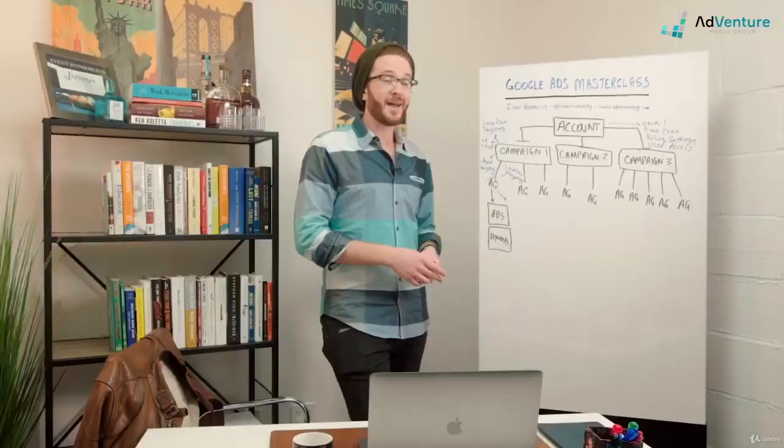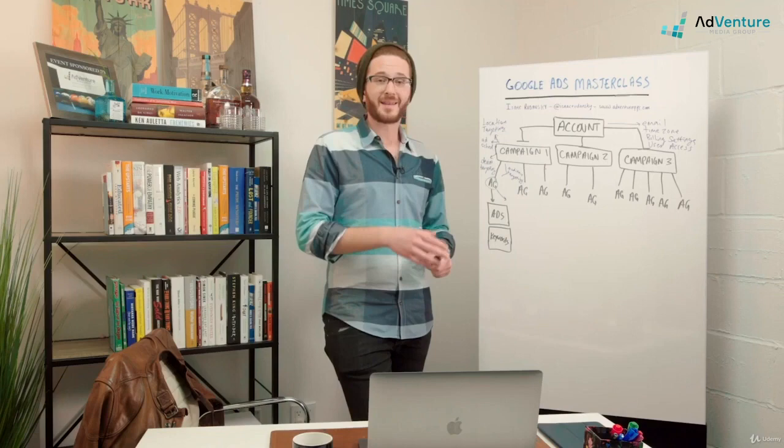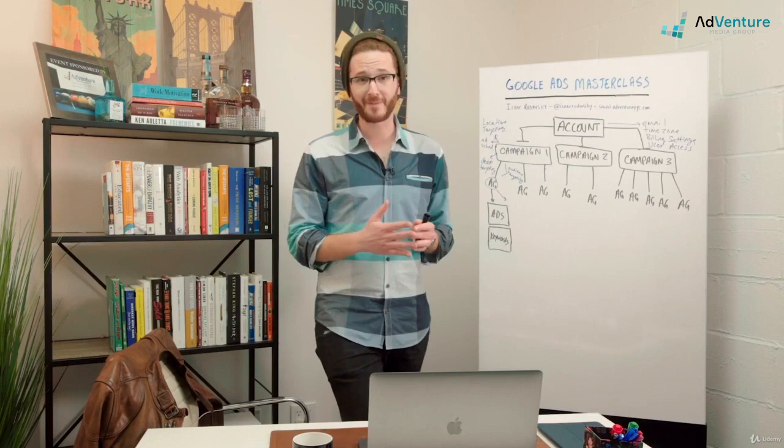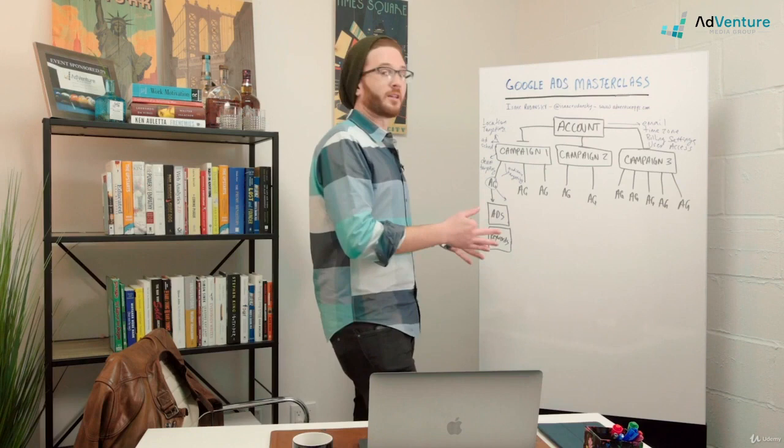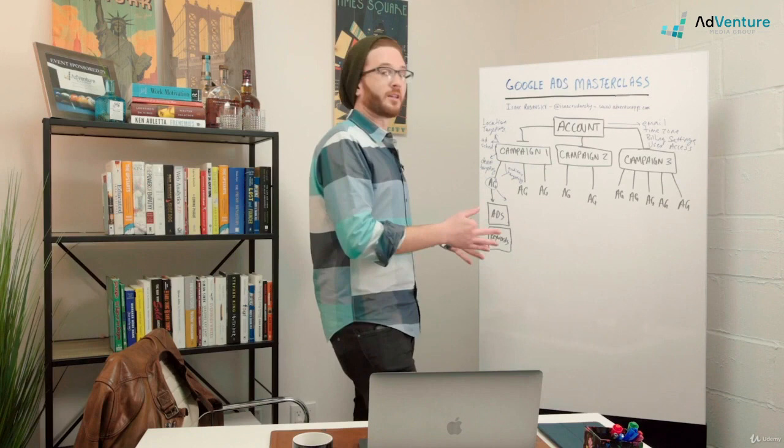Google will then look to your keywords to see and based on match type, we're going to spend quite a bit of time talking about keywords and match types. Google will see is this keyword eligible? Is it related enough to the search term? Does this account want to show an ad of the impression? And ads are what will then rotate in different ways for a specific group of keywords inside an ad group.